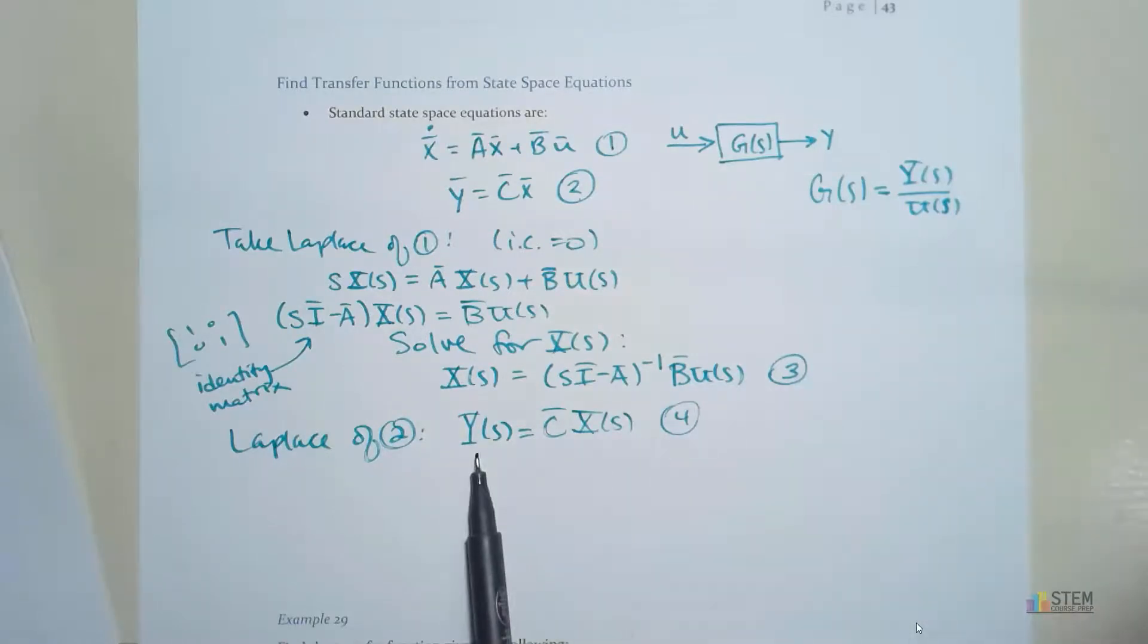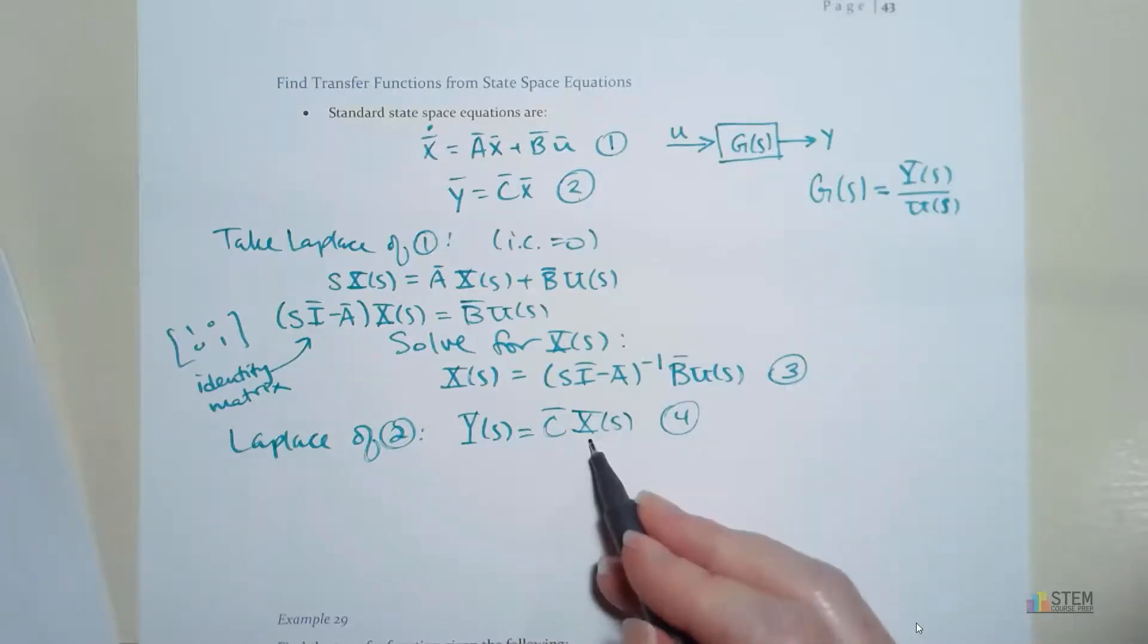Now I've got Y here. I've got U here. And here is X in both of these. So if I make this substitution where I plug in this equation 3 right here then I will get rid of that X term and I'll have it in terms of Y and U which is what I need. So that's what we'll do. We're going to plug 3 into 4 right here.